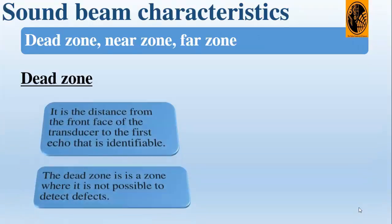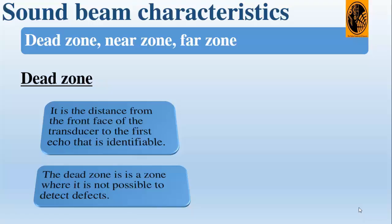Let's start with the dead zone. It is the distance from the front face of the transducer to the first echo that is identifiable. The dead zone is a zone where it is not possible to detect defects.